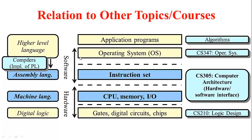The instruction set of the processor is what is implemented by the components of the computer system. Using the instruction set, the operating system runs, and application programs via the operating system use the instruction set to run their applications. The application programs and operating systems are usually written in a higher level language such as C, C++, or Java. This higher level language gets converted into assembly language, which essentially corresponds to the instruction set of the computer. The assembly language gets converted to machine language, which is nothing but a binary version of the assembly language, and the machine language is in turn implemented using digital logic.